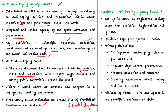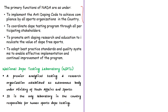The World Anti-Doping Code is the core document that harmonizes anti-doping policies, rules, and regulations. Since 2004, WADA maintains an annual list of prohibited substances and methods — classified in categories such as steroids, stimulants, and gene doping. NADA — the National Anti-Doping Agency — was set up as a registered society under the Societies Registration Act 1860 in 2005, with a mandate for dope-free sports in India. Its primary objective is to implement anti-doping rules per the World Anti-Doping Code. The ex-officio chairman of NADA is the Minister of Youth Affairs and Sports. NDTL — the National Dope Testing Laboratory — is the only laboratory in India responsible for human sports dope testing, functioning under the Ministry of Youth Affairs and Sports.